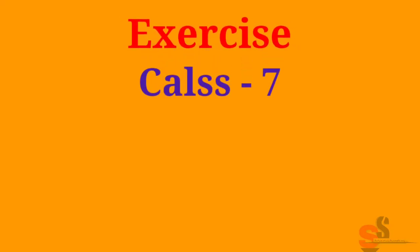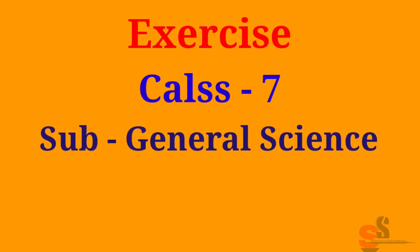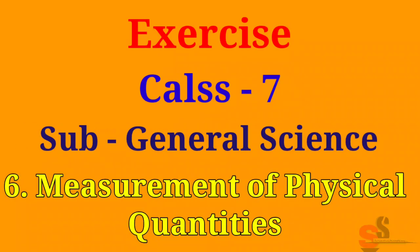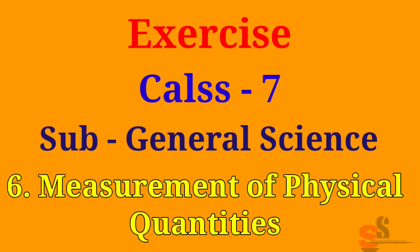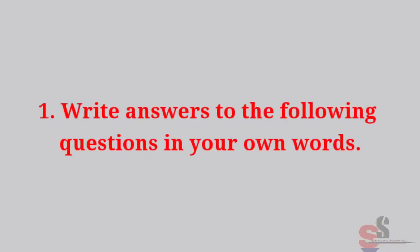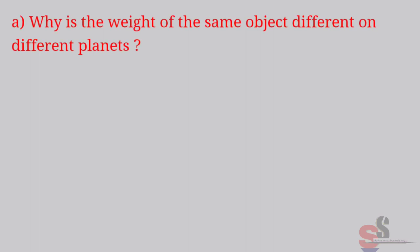Exercise Class 7, Subject General Science, Chapter Number 6, Measurement of Physical Quantities. Question 1: Write answers to the following questions in your own words. Why is the weight of the same object different on different planets? Answer.